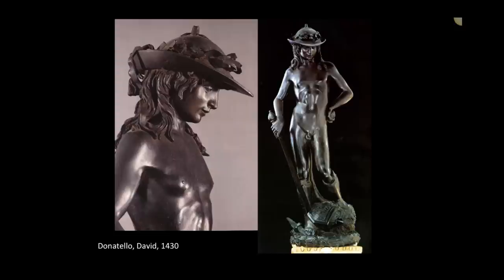Then a young boy essentially volunteered, with the logic that God is on our side and will protect him. They offer him armor, he turns it down, simply walks and picks up a few stones from the river with a sling. He slings a stone and hits Goliath right in the center of the head. Goliath falls to the ground. David then takes Goliath's sword and severs Goliath's head. Donatello has taken the moment after he has severed the head — David's one foot rests on top of Goliath's head, holding in his slight right arm a very large sword.